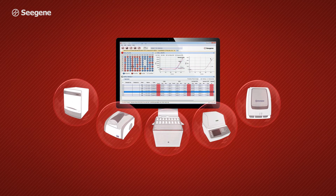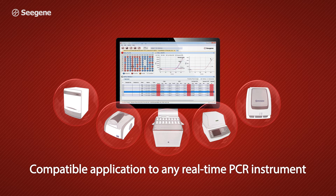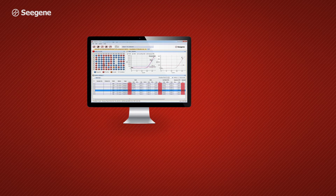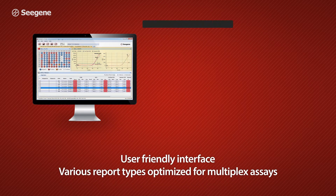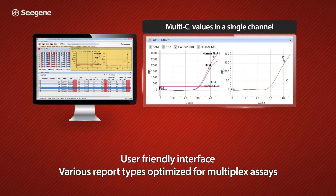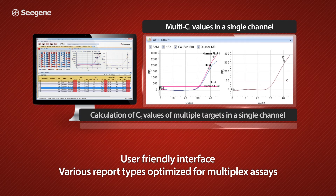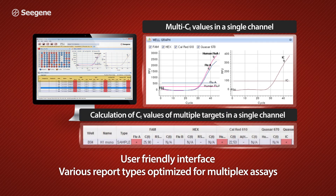C-Gene Viewer Analysis Package is compatible with any real-time PCR instrument. Use our intuitive and easy-to-use software to analyze multiple CT values of targets in a single channel. C-Gene Viewer provides color-coded result interpretation, graph images, and result sheets of test samples.